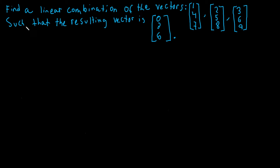Over here, I've given you three vectors: 1, 4, 7; 2, 5, 8; and 3, 6, 9. I've asked you to find a linear combination of these vectors such that the resulting vector is 0, 3, 6. If you think you know what this question is asking and believe you can attempt a solution, pause the video and try it, then come back to check your work.